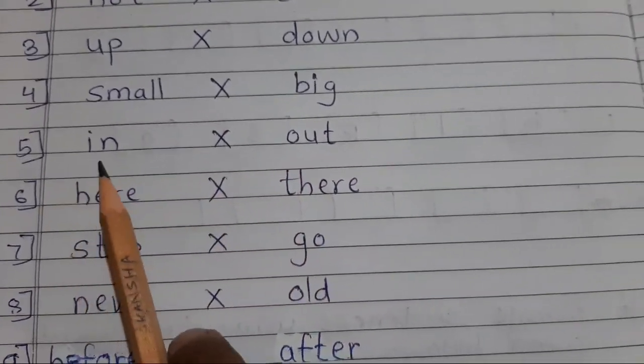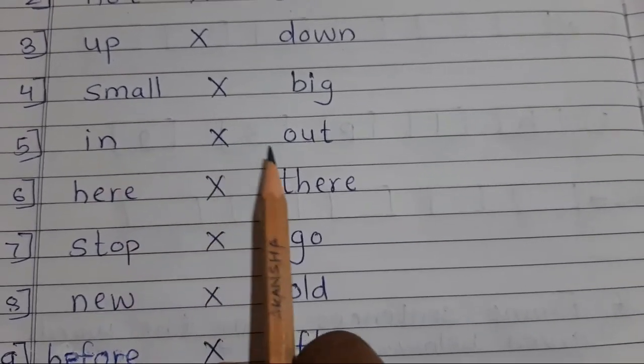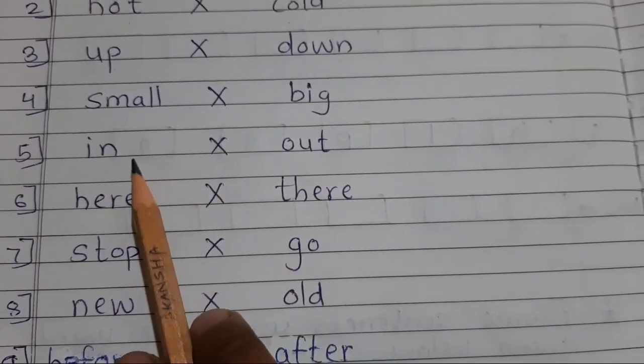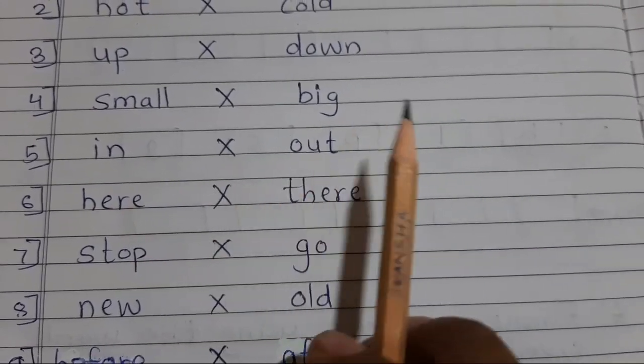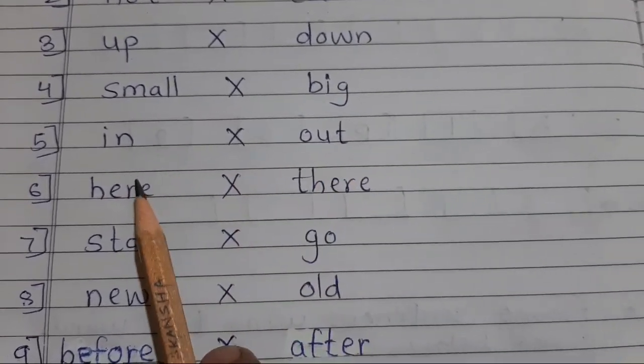Number five. I-N in. In opposite O-U-T out. In means andar. Out means bahar. Andar, bahar. In, out.